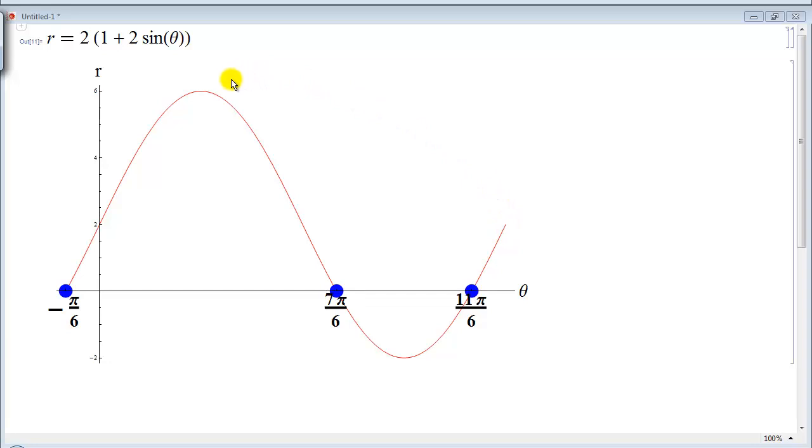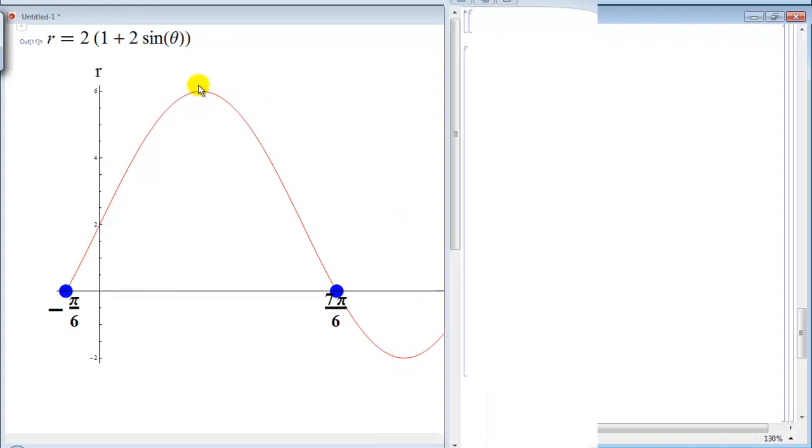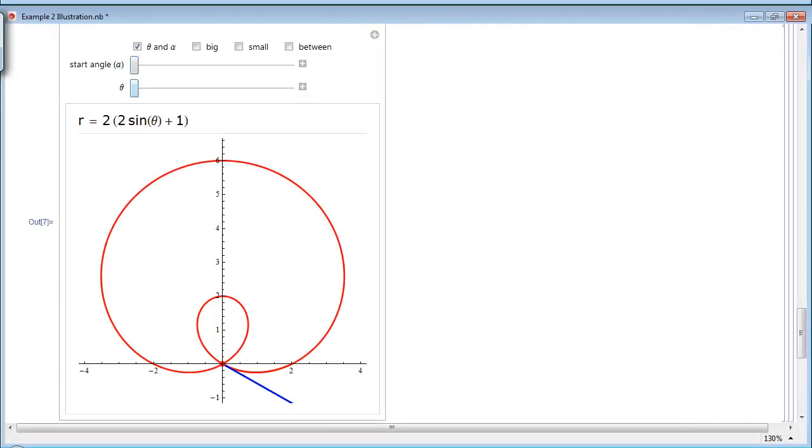The maximum occurs here at π over 2, between these two values. And the minimum here occurs at 3π over 2 between these two values. This is the top of the inner loop. This is the top of the outer loop.